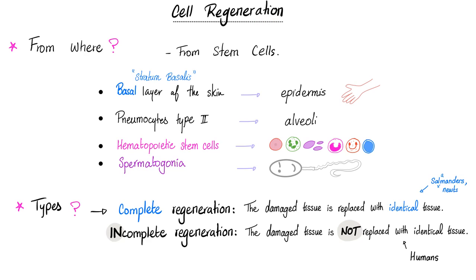Cell regeneration — how do you regenerate? From stem cells. If you're talking about regeneration of the epidermis, you can thank the basal layer of the skin called stratum basale. If you're talking about regeneration of the alveoli, thank your type 2 pneumocytes. Regeneration of blood cells — thank your hematopoietic stem cells in the bone marrow. Regeneration of your sperm — thank your spermatogonia, dishing out millions of sperms every day.